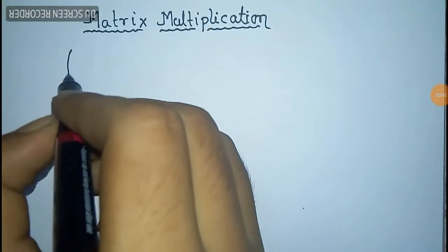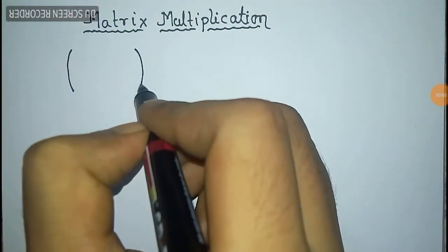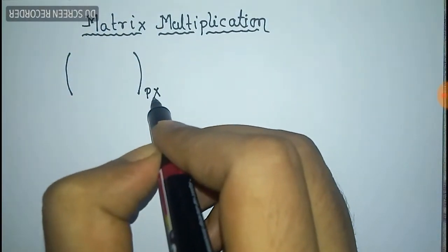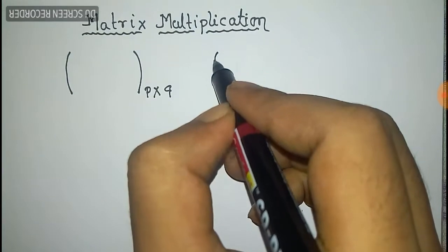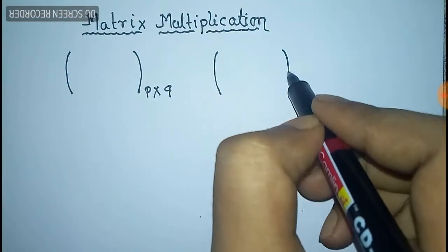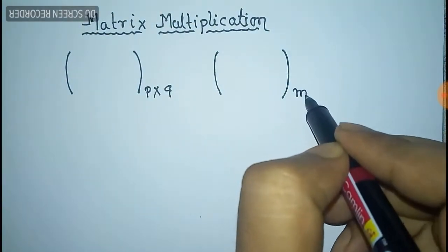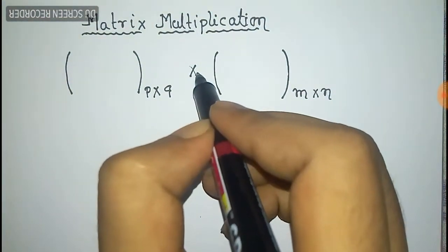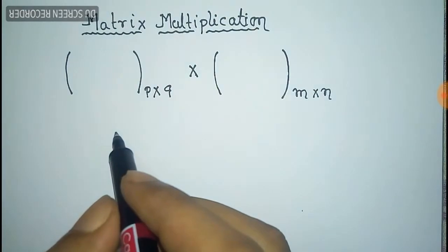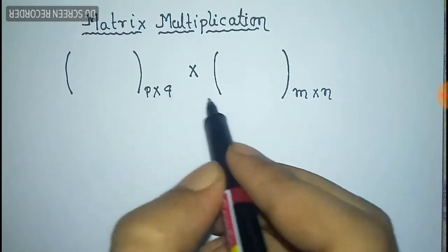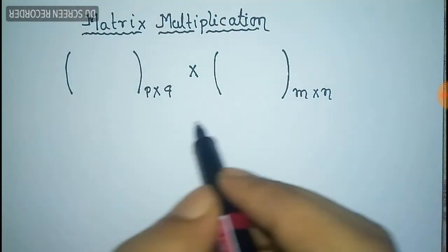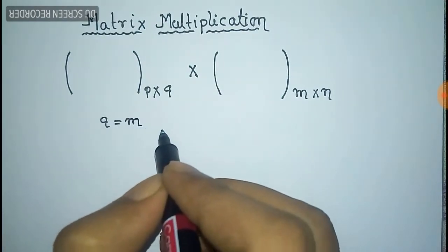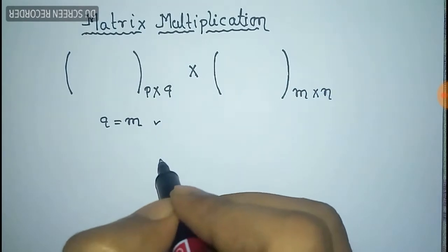We shall discuss the matrix multiplication process. First, we shall take a matrix of order P by Q and another matrix of order M by N. Here P is the number of rows and Q is the number of columns. To multiply these, we need a condition: Q must equal M, where Q is the number of columns of the first matrix and M is the number of rows of the second matrix — these should be equal.